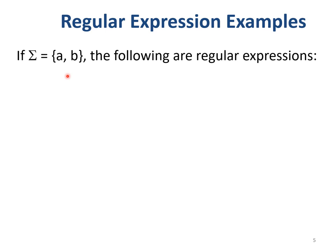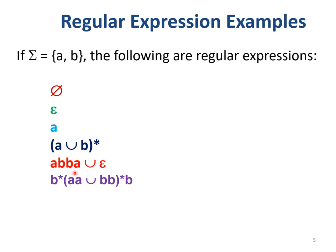If Σ = {a, b}, then the following strings are regular expressions: null is a regular expression, epsilon is a regular expression, a is a regular expression, b is a regular expression. A regular expression union a regular expression is a regular expression. A regular expression in parentheses is a regular expression. A raised to star is a regular expression. A concatenated with B is a regular expression, and epsilon union a regular expression is also a regular expression.